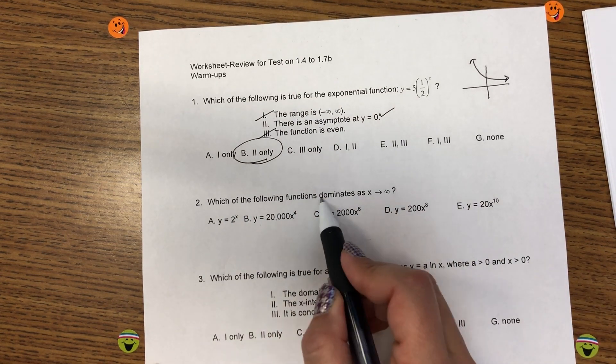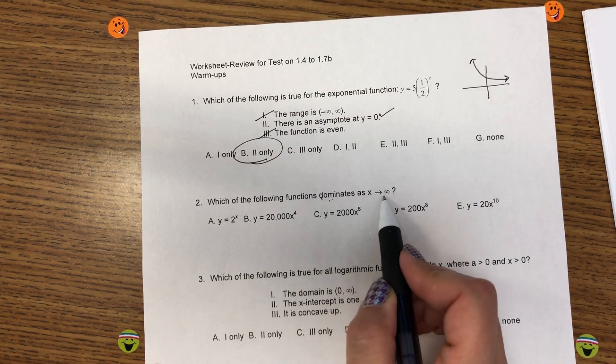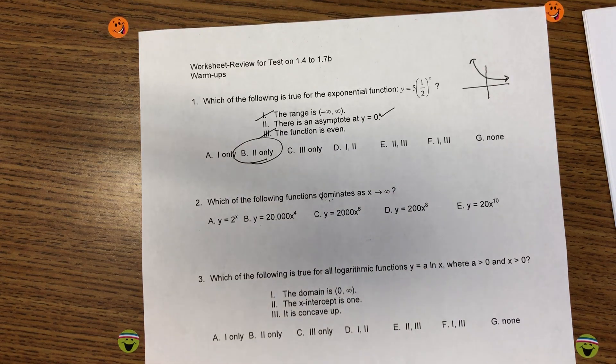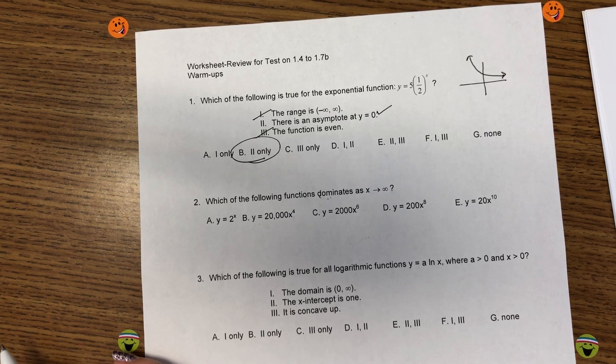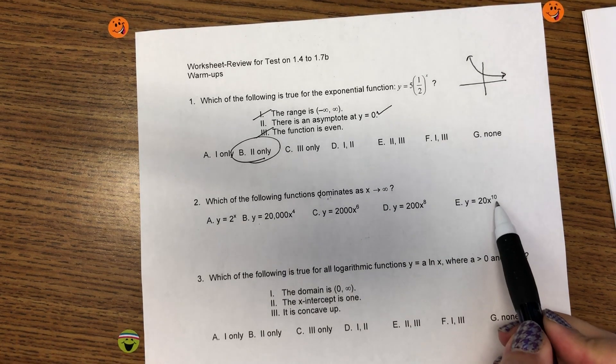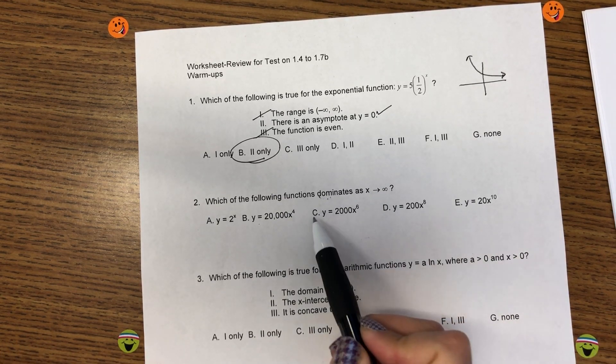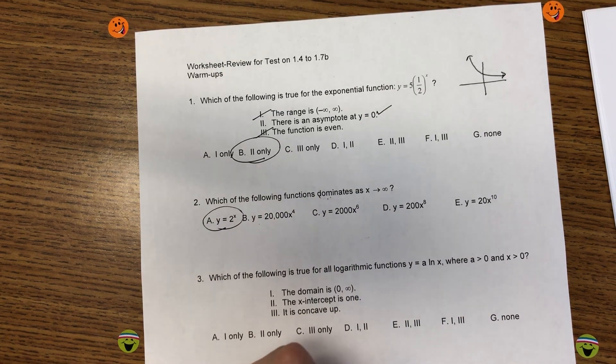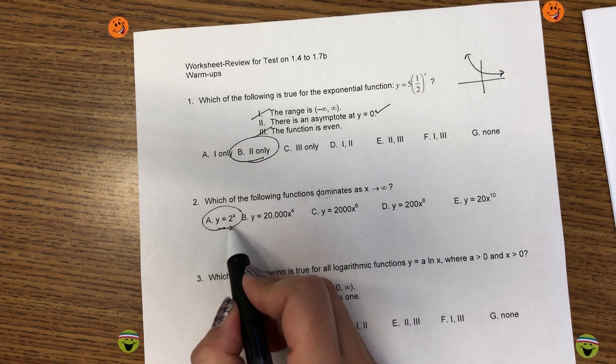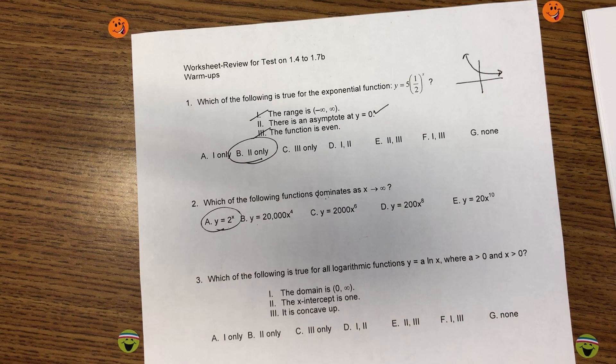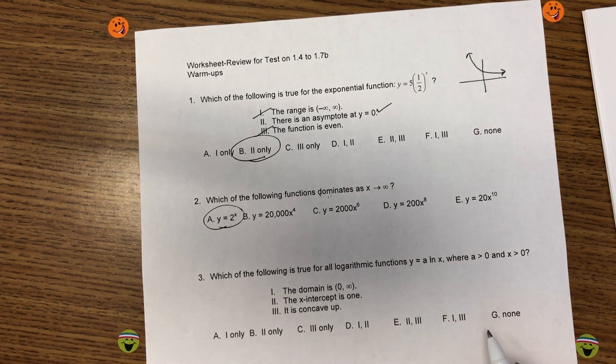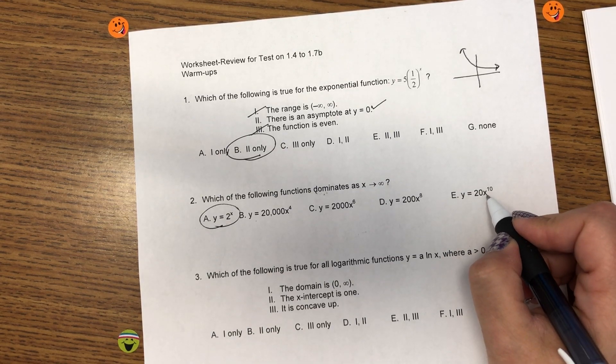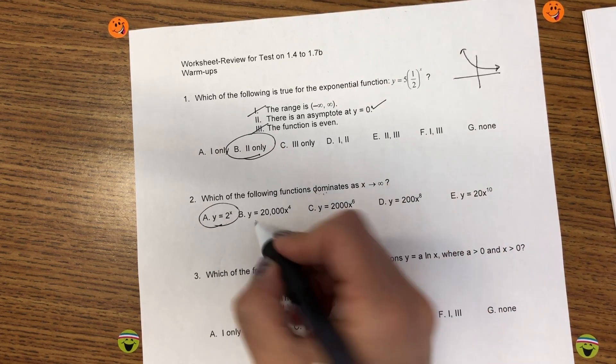Which of the following is larger for y's as x goes to infinity? Ignore the coefficients. The 20,000, the 2,000, that does not matter. I'm only looking for exponents. So, which graph will have the highest exponent? Oh, the exponential. Exponential will always dominate over a power function as x goes to infinity. If a was not a choice, then e would be the next. And then d, then c, then b.